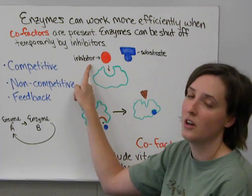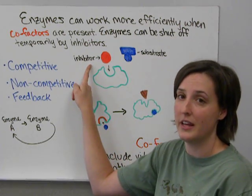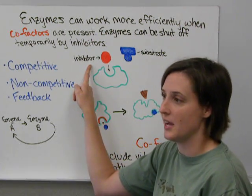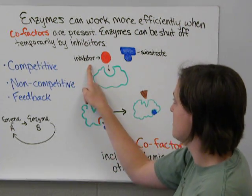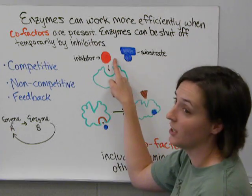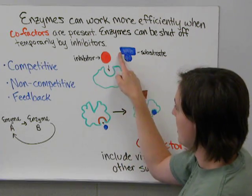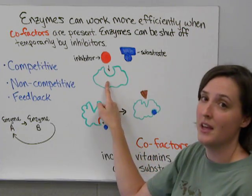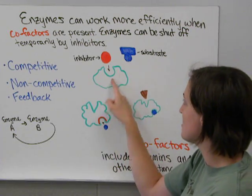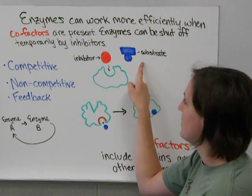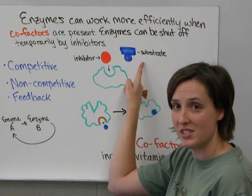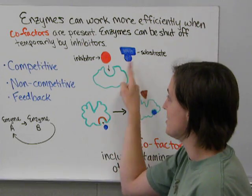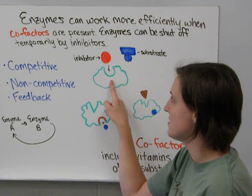Competitive inhibitors are inhibitors that look like the enzyme's substrate. A look-alike molecule binds to the enzyme and competes with the regular substrate for the active site.